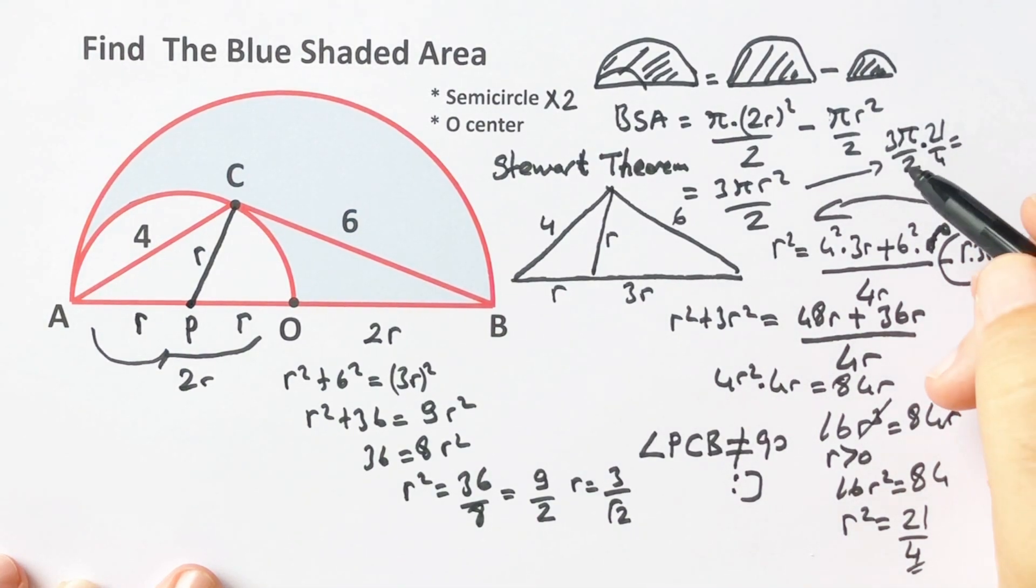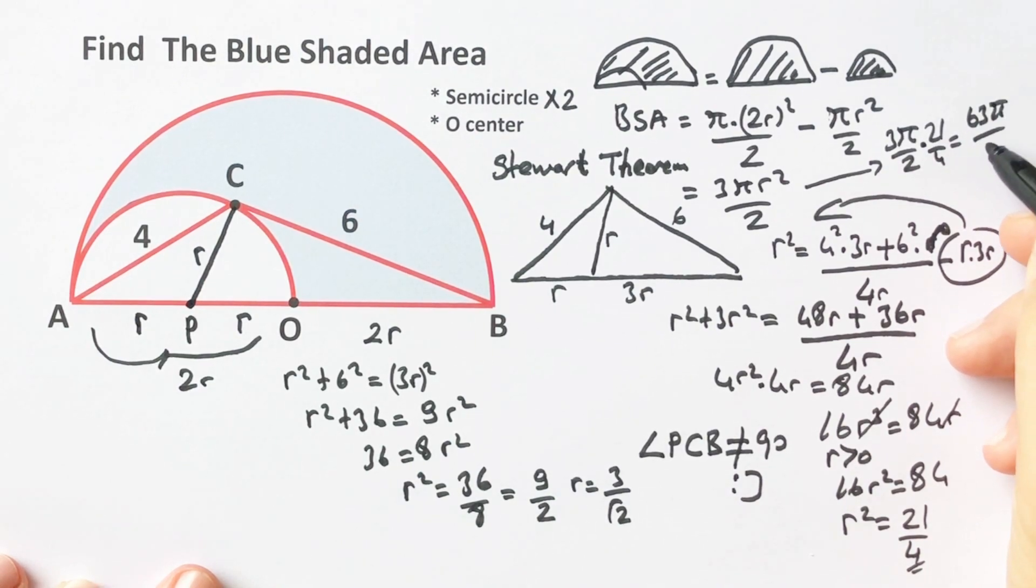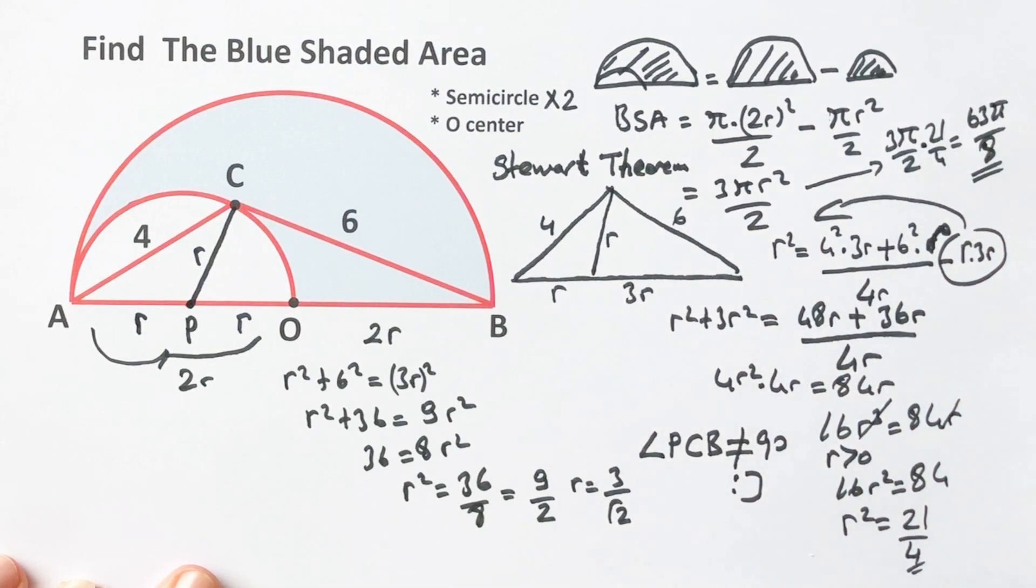So the blue shaded area equals 63π over 8 square units.